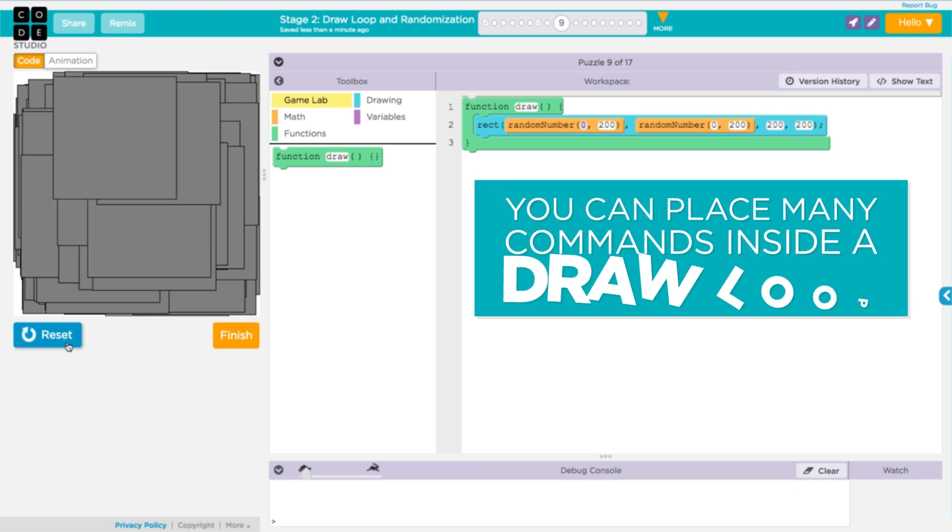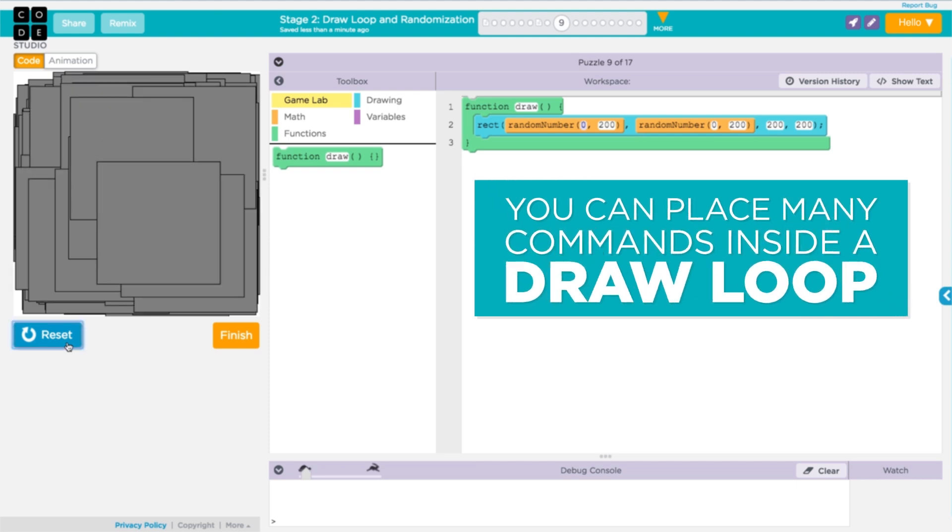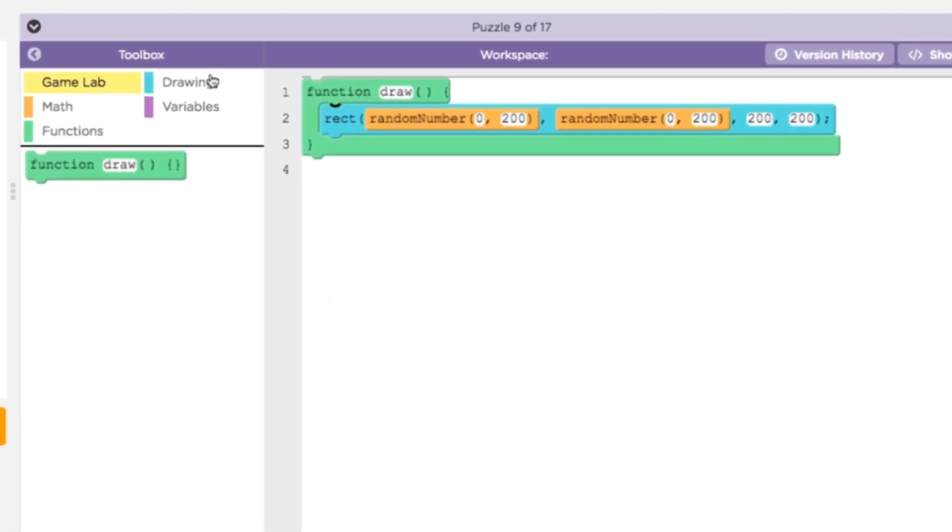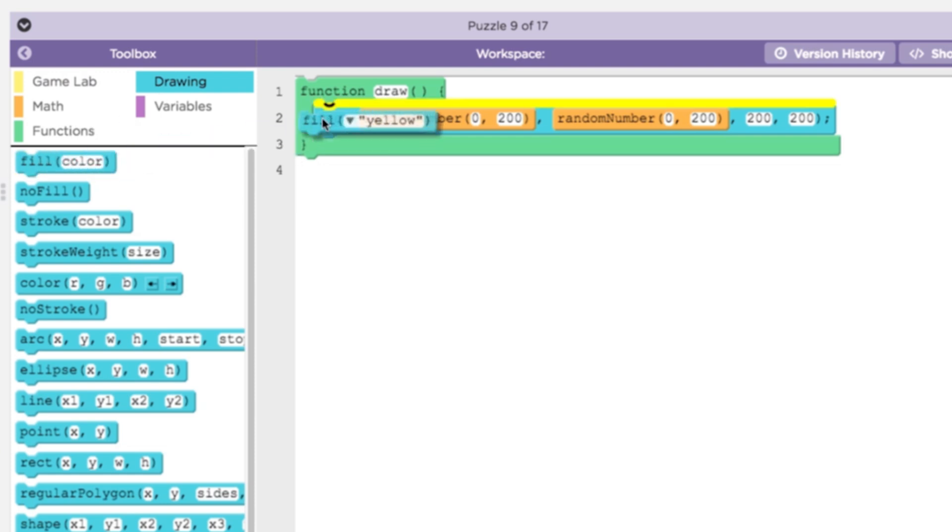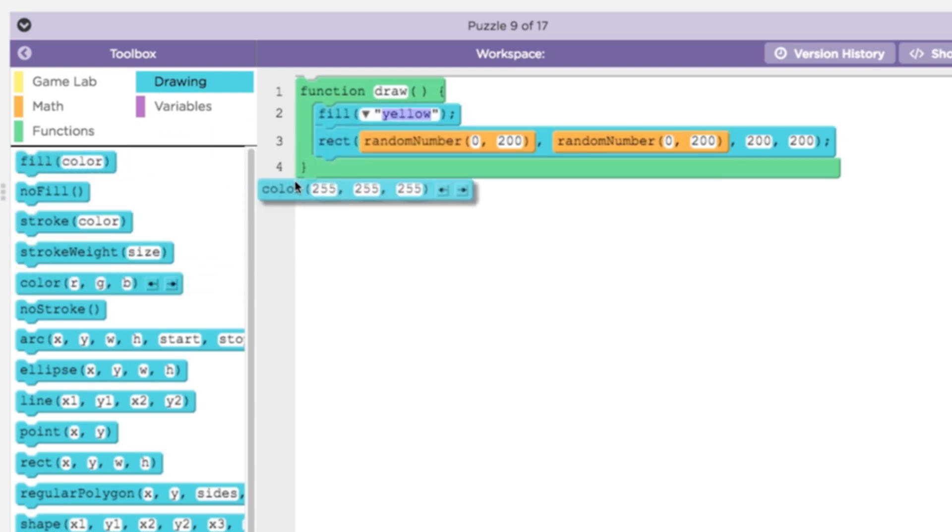You can place as many commands as you like inside of the draw function. For example, let's choose a new fill color before drawing each rectangle by placing a fill command inside the draw loop.